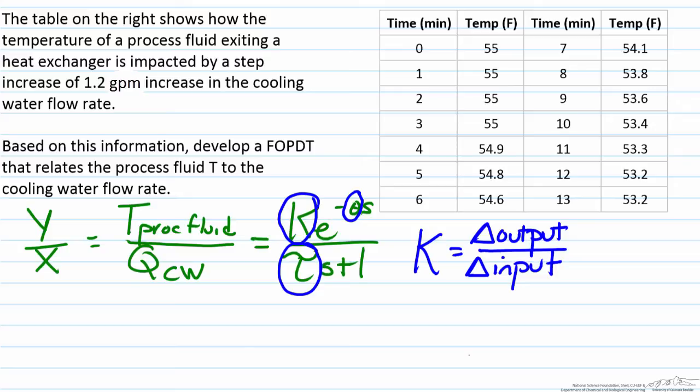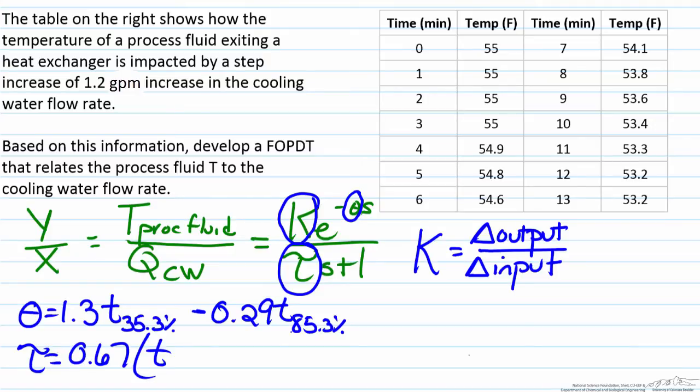In order to find tau and theta there are a number of different correlations that have been developed by different researchers. Here we'll use the correlations developed in the late 70's by Sundar Asan and Krishnaswani, which state the fact that the dead time can be found by 1.3 multiplied by the time corresponding to 35.3 percent of the change, this will be explained shortly, minus 0.29 multiplied by the time it takes for 85.3 percent of the change to occur. And tau can be defined as 0.67 multiplied by the difference between the 85.3 percent time mark and the 35.3 percent time mark.